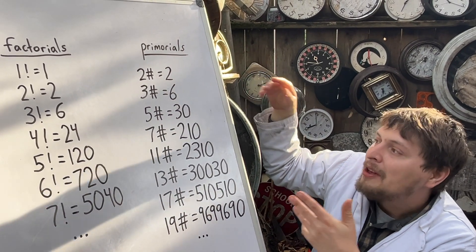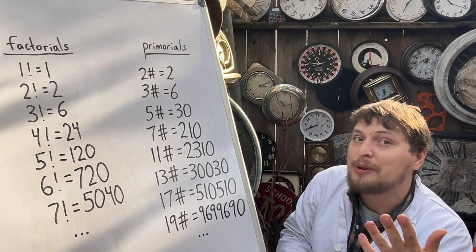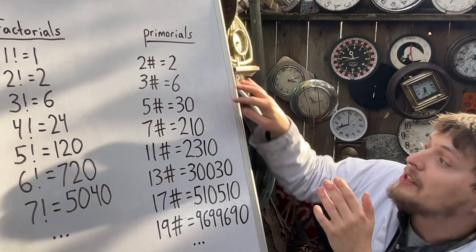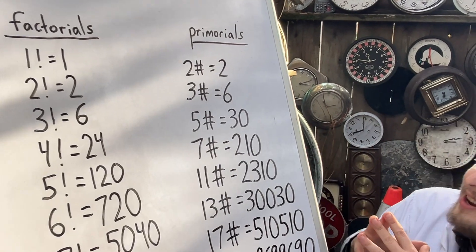5 primorial, that would be 2 times 3 times 5, all the primes up to there, which is 30 in that case.